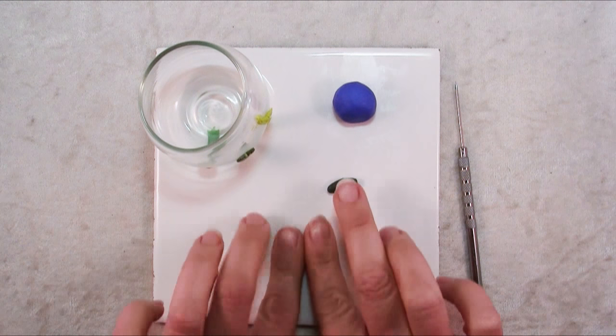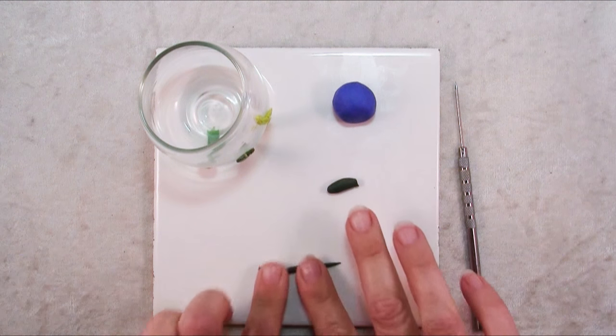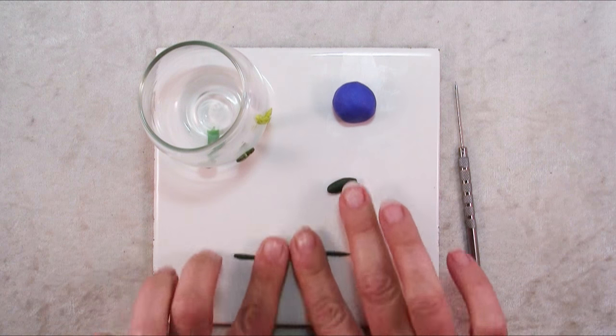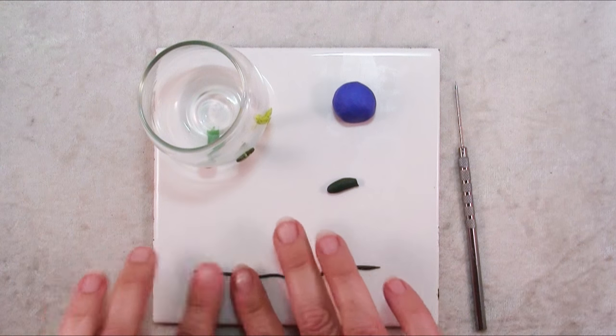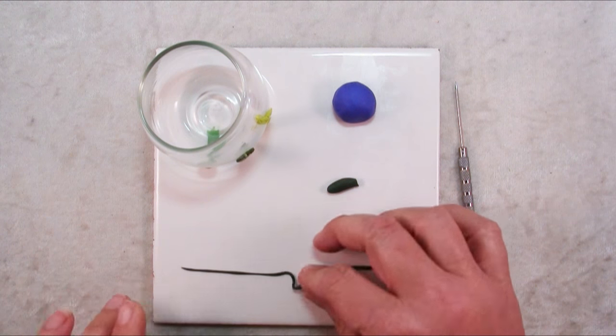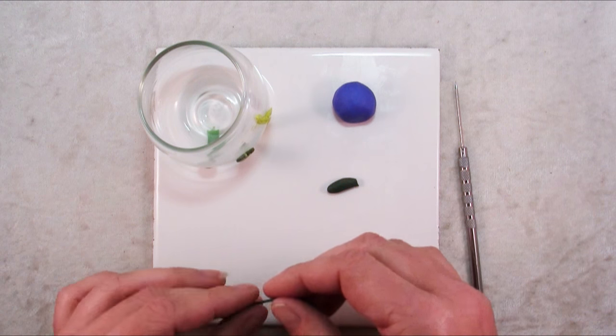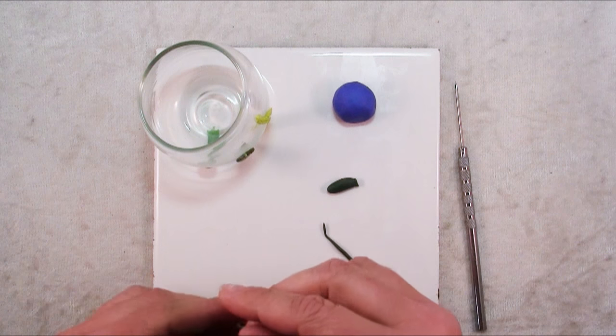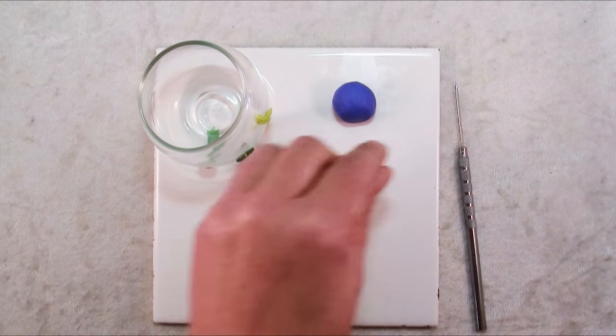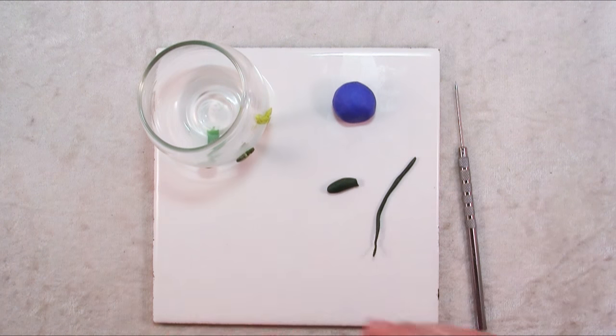So you just need some green clay and in order to get a variety of greens I've just taken some out of my scrap bin and if I want to make it darker I might mix in some brown or some black or gray, or you could mix in whites just to get a whole variety of greens just like in nature.